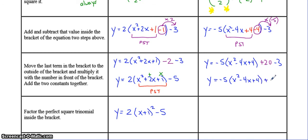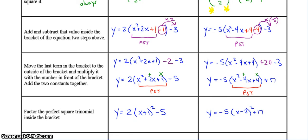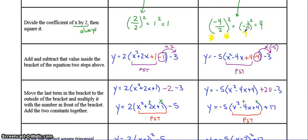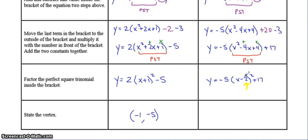And 20 minus 3 is 17. There's our perfect square trinomial. The two numbers that multiply to 4 and add to negative 4 are both negative 2, and because they're the same you can write it as x minus 2 squared. Just a little hint: this number right here is always going to be the same as this number right here — after you've divided by 2 and before you square it, that number negative 2 is always going to be the same as the number inside the bracket.